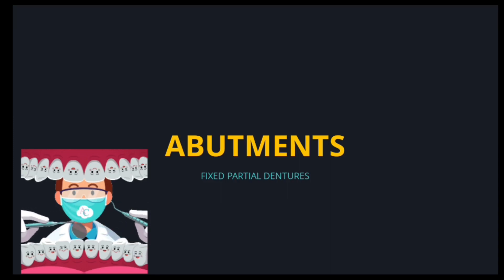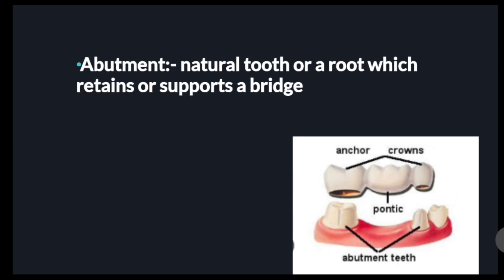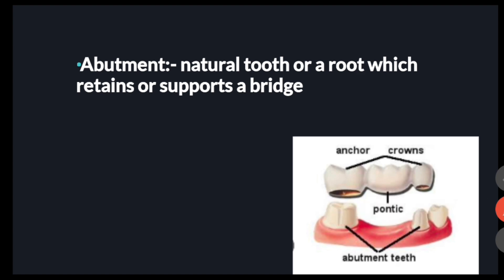Diving right into our topic which is abutments in FPD. First we need to know what is an abutment. An abutment is a natural tooth or root which retains or supports a bridge. Here you can see there is a missing tooth, and those adjacent teeth which are prepared to support the missing tooth are known as your abutment.